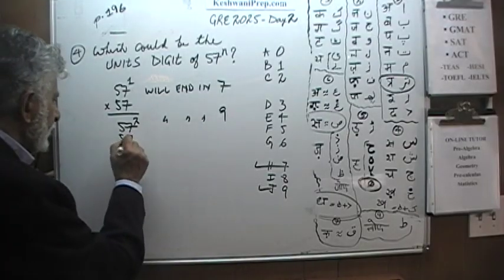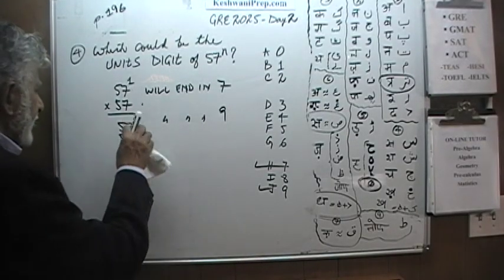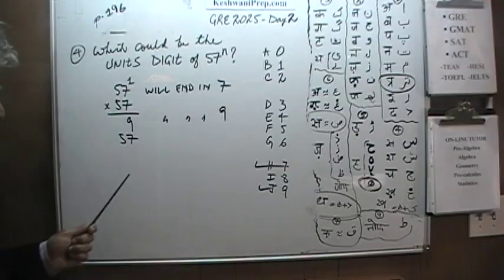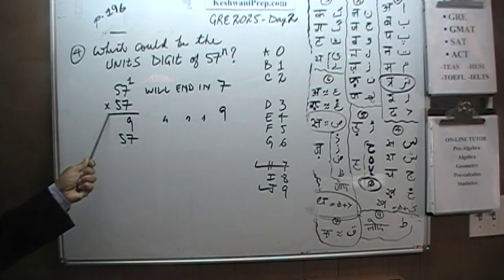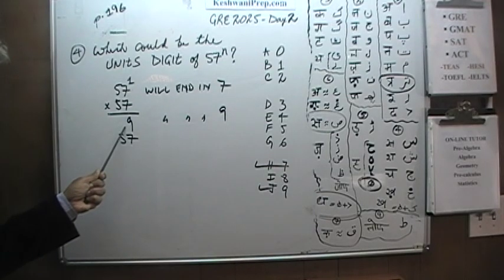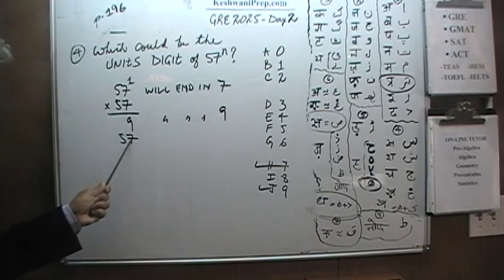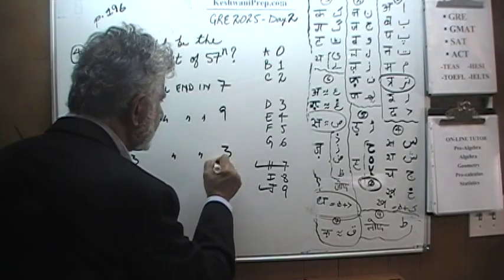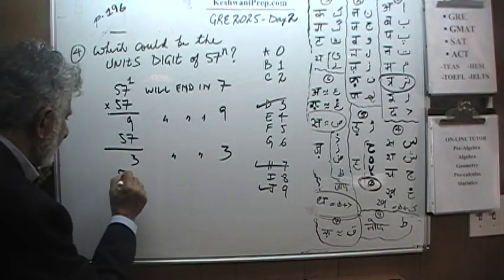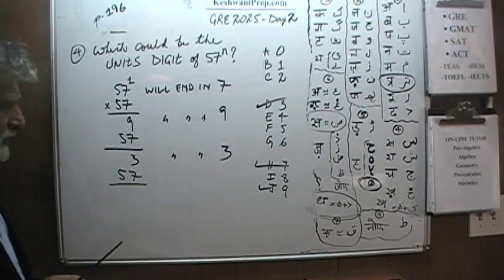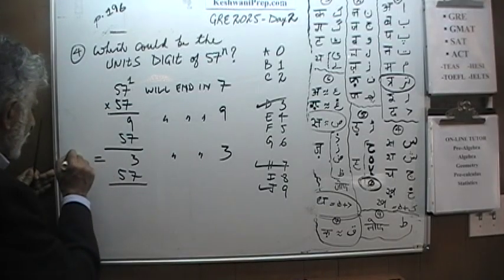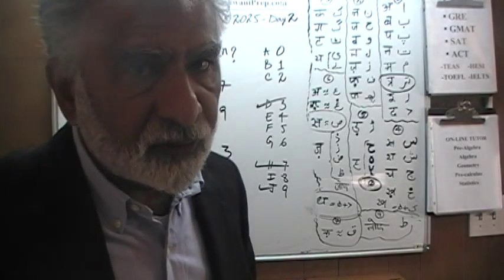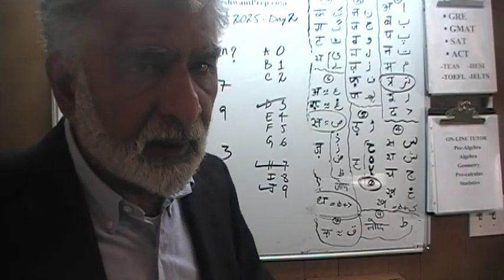Now multiply by 57 one more time — don't forget that this ends in a 9. We are not interested in what 57 times 57 exactly is; don't waste your time with that. Whatever it is, if it ends in a 9, you multiply again by 57: 9 times 7 is 63, so it is going to end in a 3. That works. So 57 cubed ends in a 3.